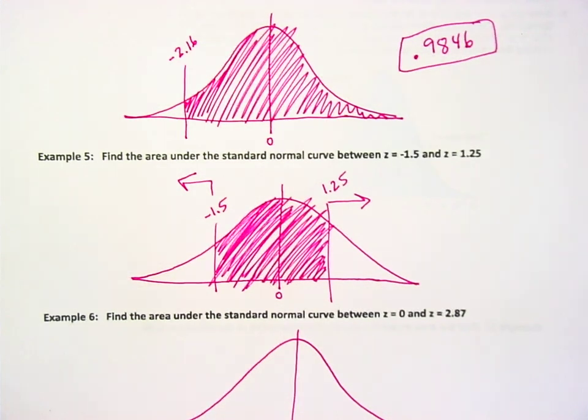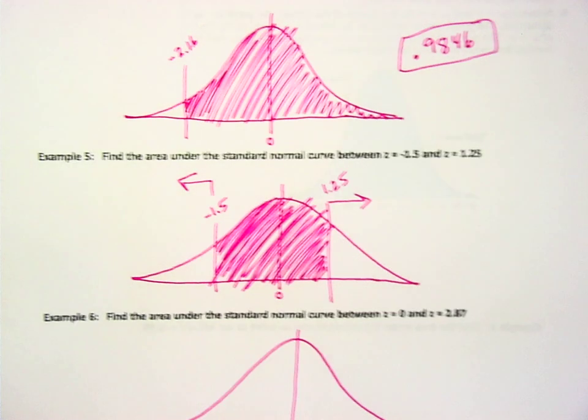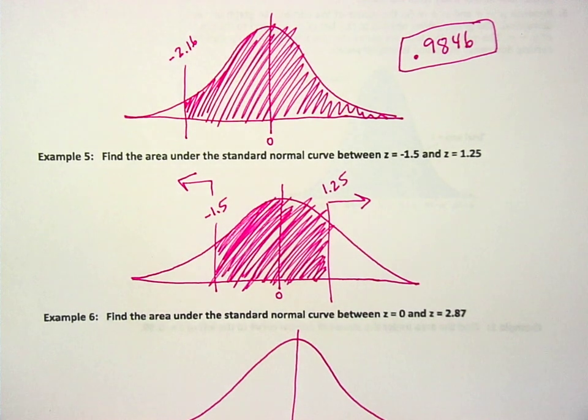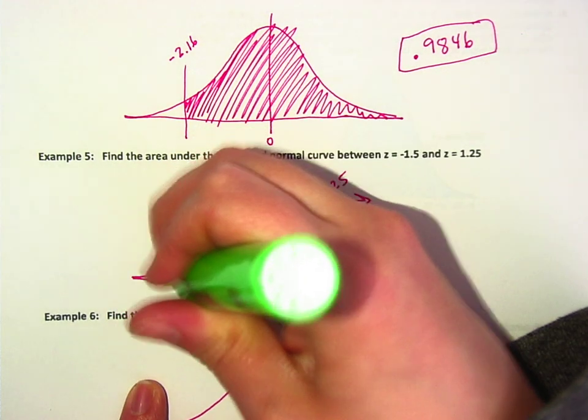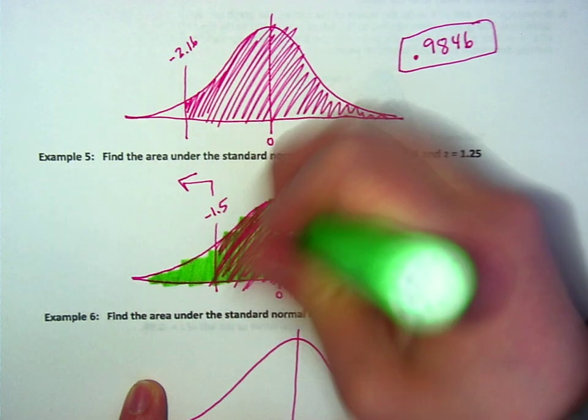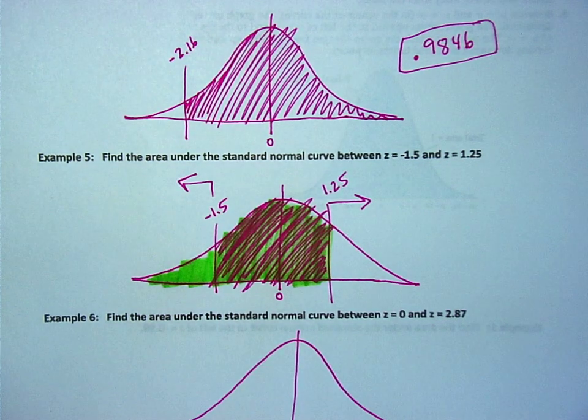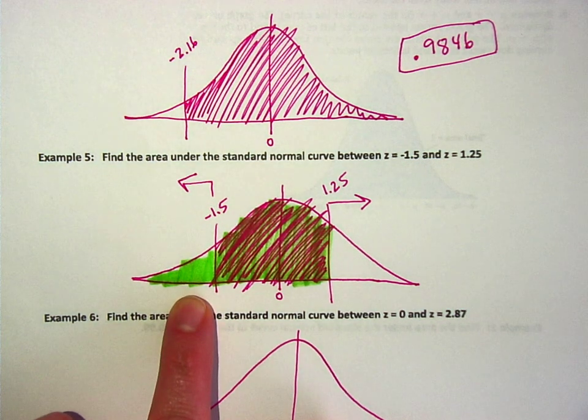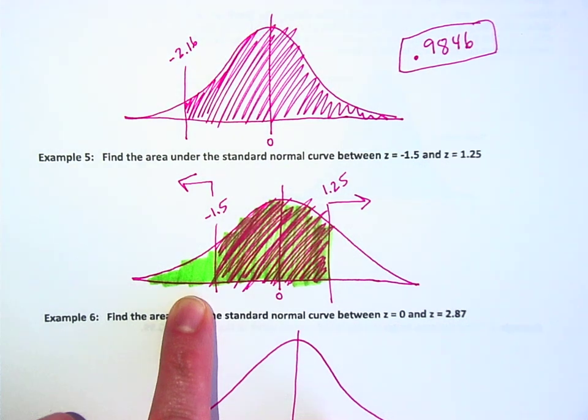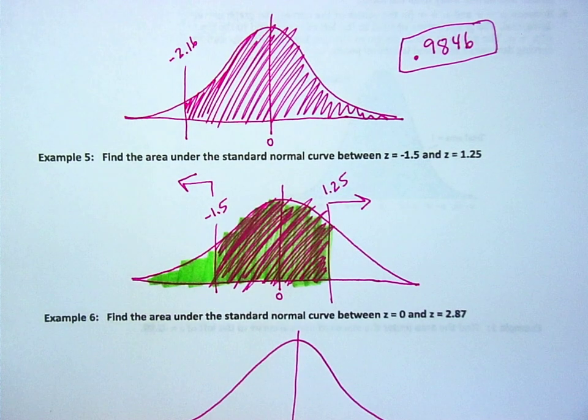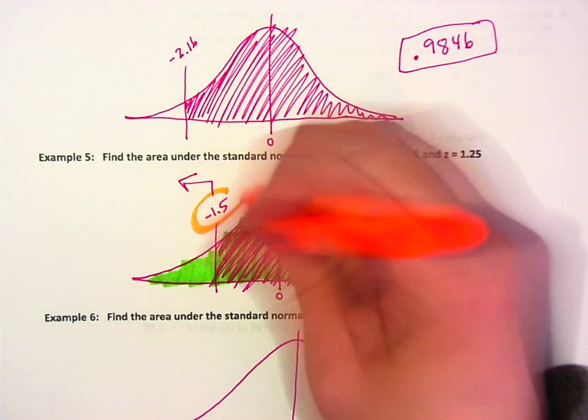Okay, so let's think about it. I'm going to use colors this time. I shouldn't use pink. Okay, so if I look up the 1.25 right now, it would give me this area, right? Which has what I want, but it also has this extra chunk over there. Do you guys understand that?